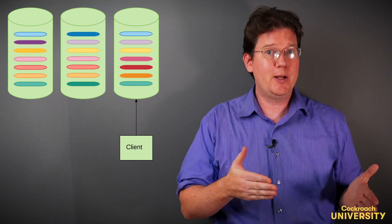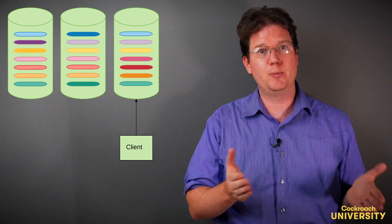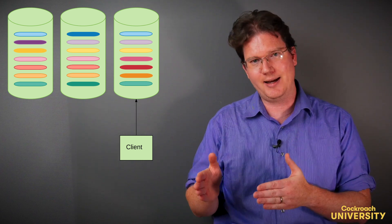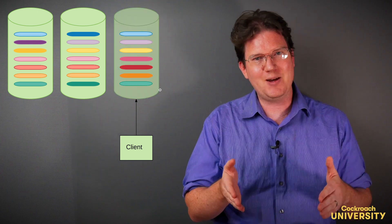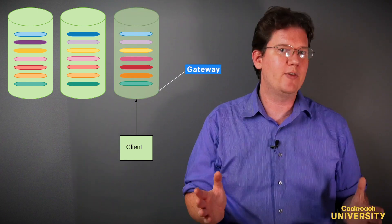Consider a three-node cluster, the smallest size for a resilient production deployment, and let's connect a client. Whichever node the client connects to is called the gateway, and it'll route queries wherever they belong.